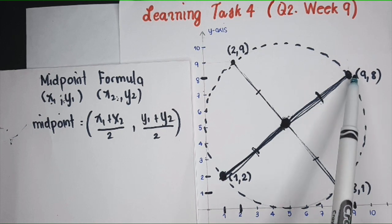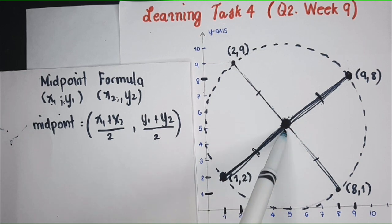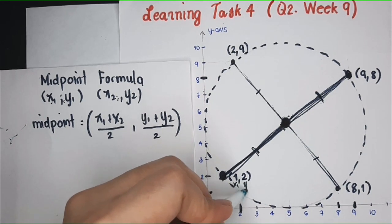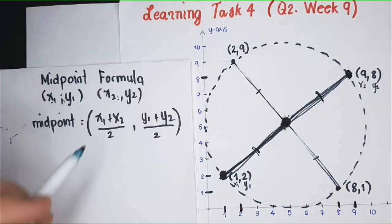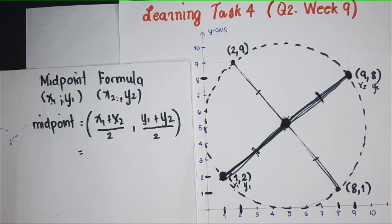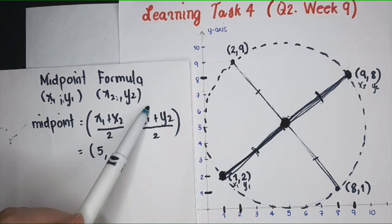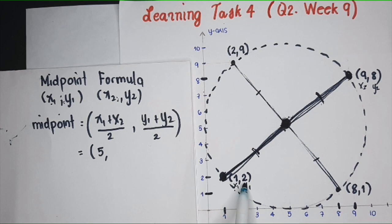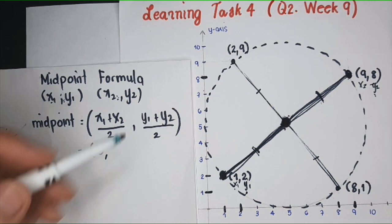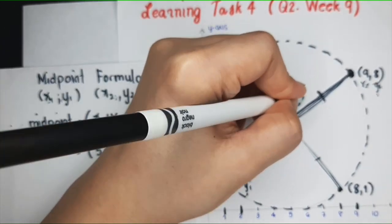To get the coordinates of this point equidistant from these two points, because it's the middle point, let's apply the formula. You can make this x1, this is y1, this is x2, and this is your y2. Then substitute. So you have x1 plus x2: 1 plus 9 equals 10, divided by 2, you get 5. For the y-coordinate, y1 plus y2: 2 plus 8 equals 10, divided by 2, you get 5. So the middle point has coordinates (5,5).